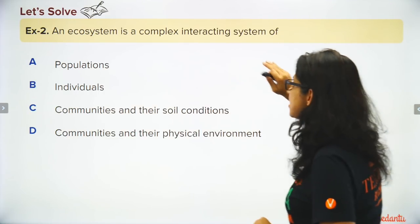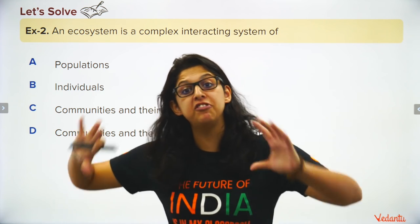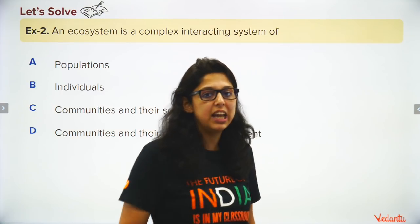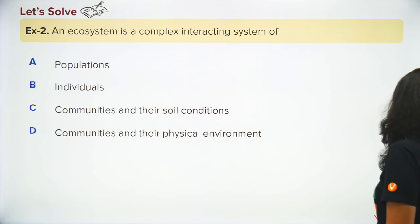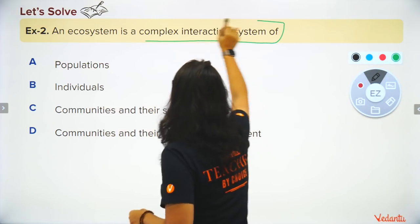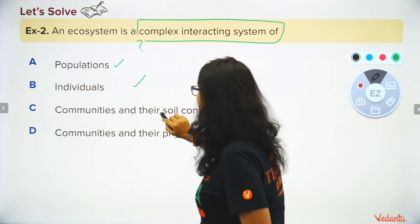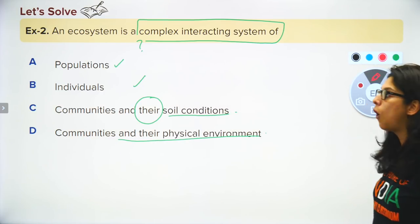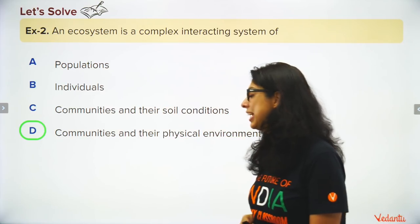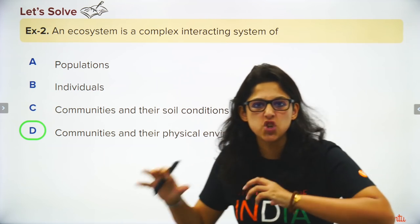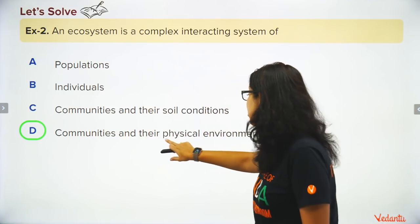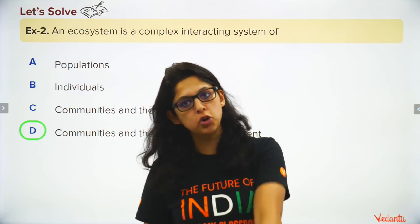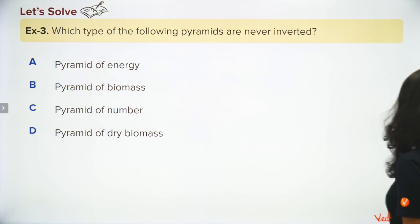Question two: an ecosystem is a complex interacting system. It's made up of living (biotic) and non-living (abiotic) components. The correct answer is communities — a group of populations including cats, dogs, humans, etc. — and their physical environment: air, soil, and edaphic factors.